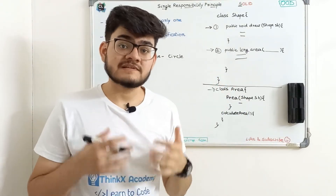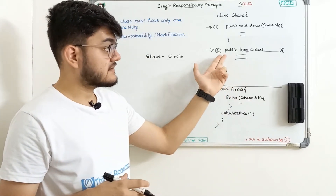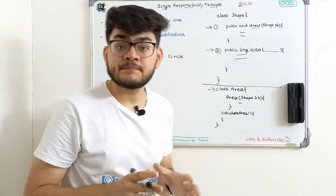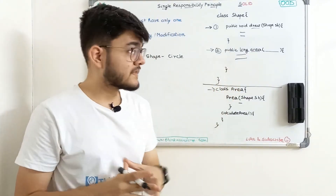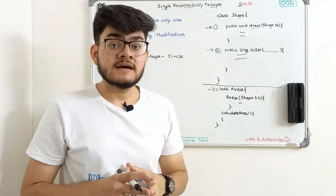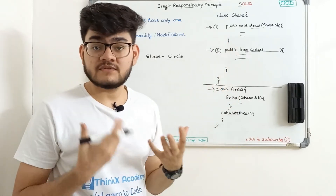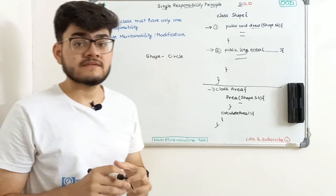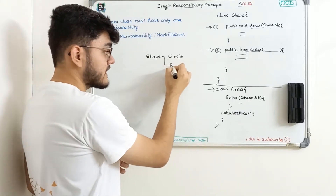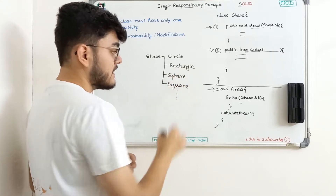When learning these principles, try to identify counter-examples first. This Shape class has more than one responsibility: the first is to draw the shape, and the second is to calculate the area. This violates the Single Responsibility Principle. Now, the client is getting more users who want to draw more shapes — a triangle, a square, and many other figures.